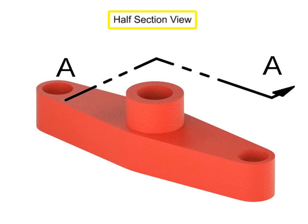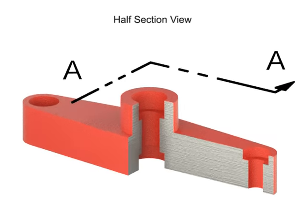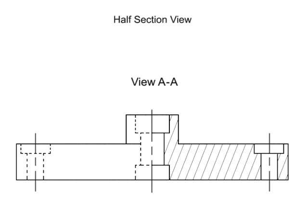Half section views are created when a section is taken from only one half of a symmetrical object. The cutting plane line for this type of view has only one arrow, since you are only viewing the section on one half of the object. One half of the new view shows the section, and the other half shows the original view.